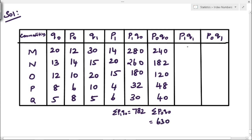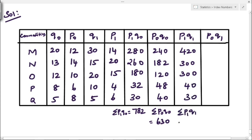Next, P1Q1. So P1Q1: 30 into 14, next 15 into 20 is 300, again 10 into 15 is 300 is incorrect — 10 into 15 is 300, 10 into 4 is 40, and 6 into 5 is 30. If you add all the values, the total is 1090.